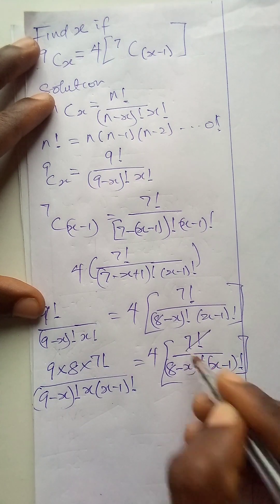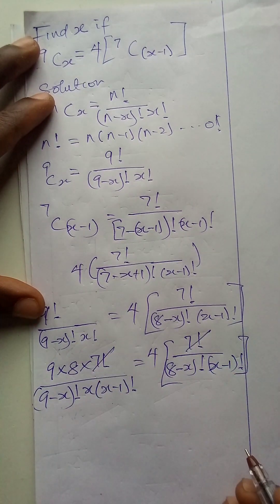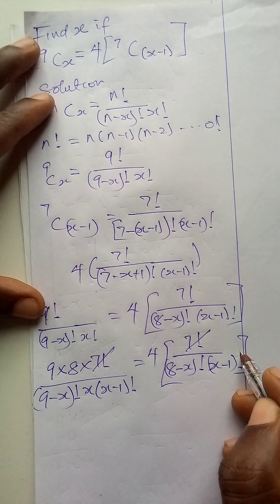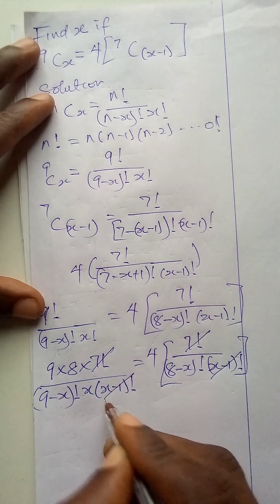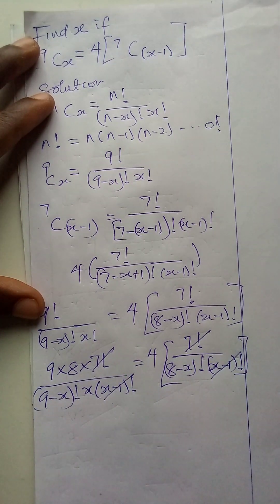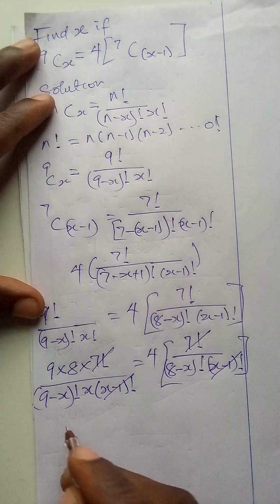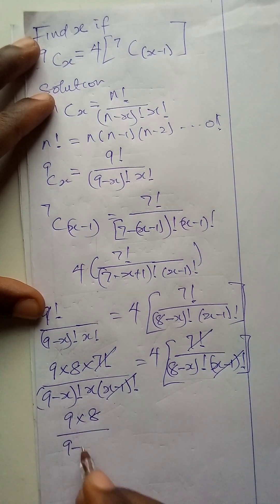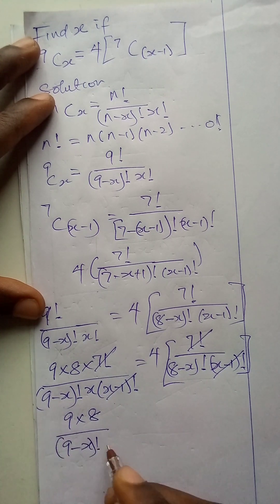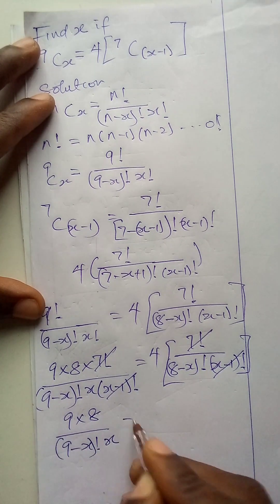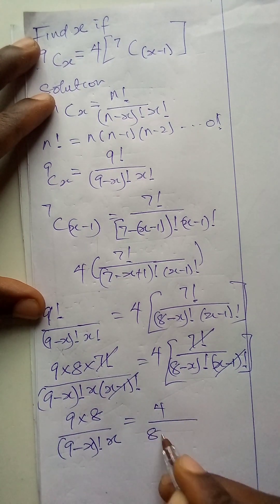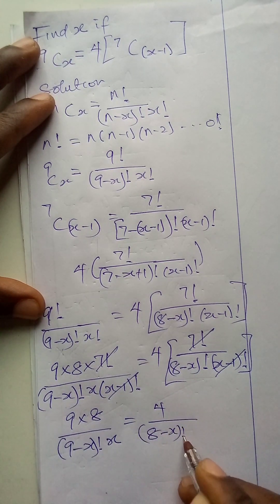This 7 factorial here will cancel this 7 factorial here. And this x minus 1 factorial will cancel this x minus 1 factorial. What remains is 9 times 8 over 9 minus x factorial times x, equal to 4 over 8 minus x factorial.